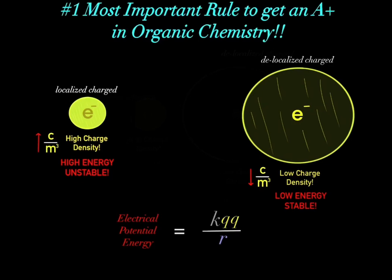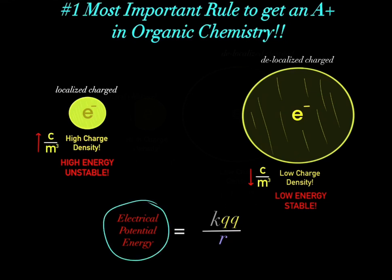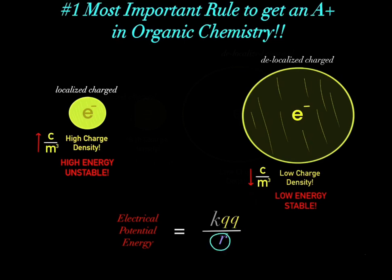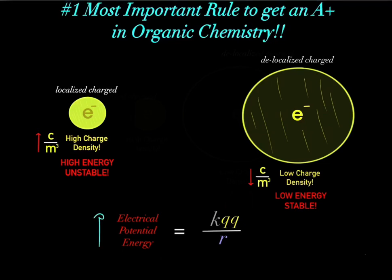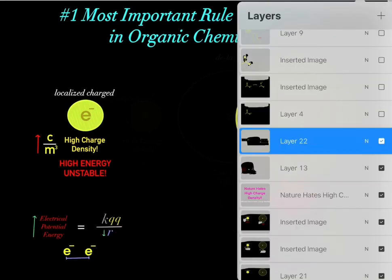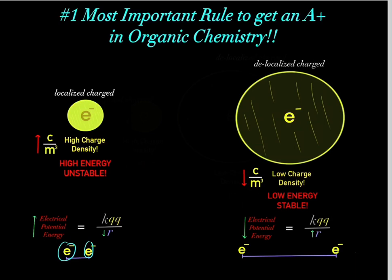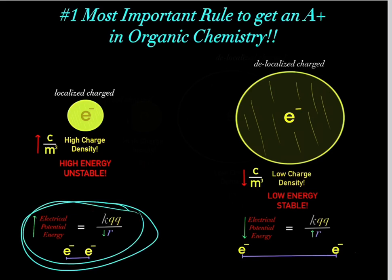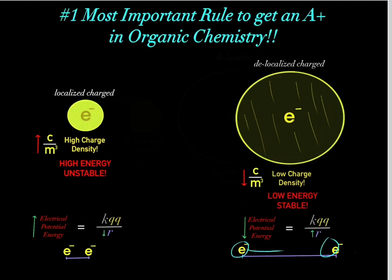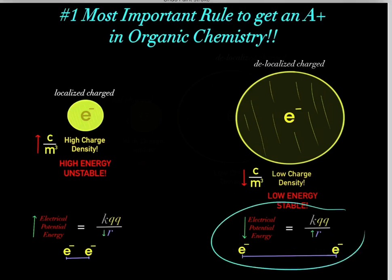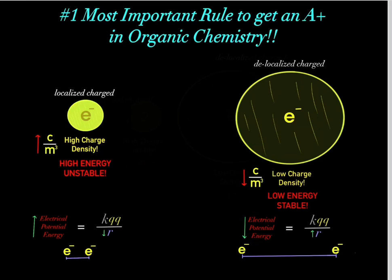If you've taken physics, you know the electric potential energy of a system is determined by a specific equation. Essentially, what this equation tells us is that the closer charges are to one another, the more electric potential energy is in the system. For example, if you have two electrons very close to one another, that system will be high in energy. However, if you have charges far away from one another, this system will be low in energy.